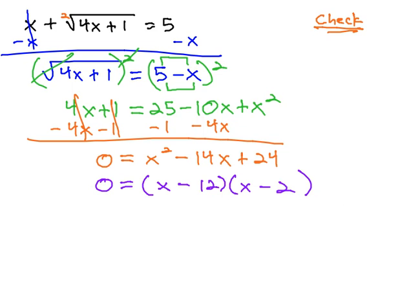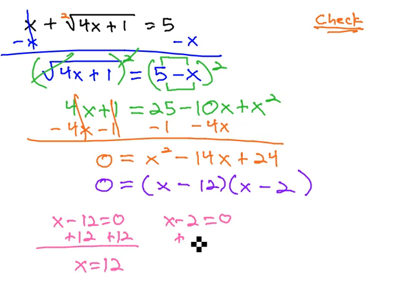And then we can set each factor equal to 0, x minus 12 equals 0 and x minus 2 equals 0, and solve them both by adding 12 to get x equals 12 for one solution, adding 2 to get x equals 2 for a second solution.